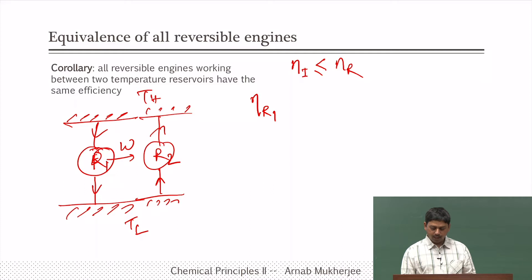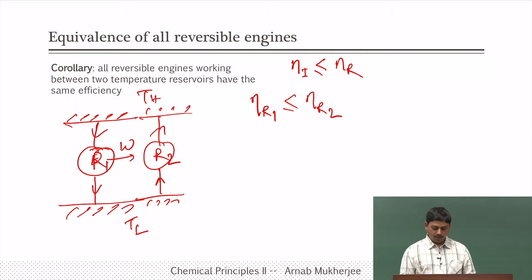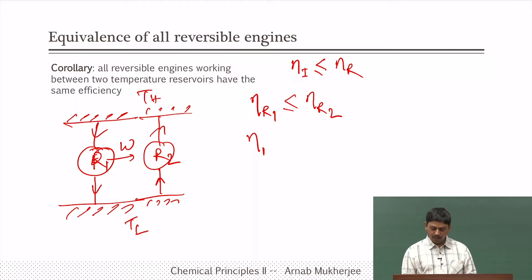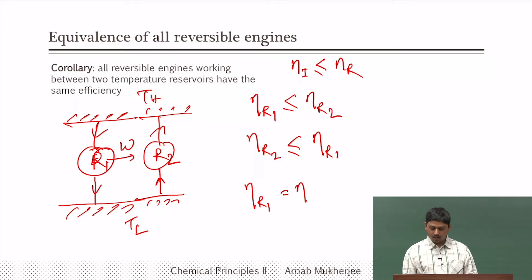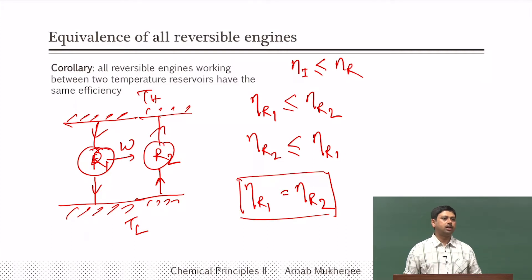Similarly, following the same argument, eta_R1 cannot be greater than eta_R2, for the same reason that an irreversible engine was not able to drive a more efficient engine. Now let us switch the places of R1 and R2: R2 drives R1, and since R1 and R2 are arbitrary, eta_R2 cannot be greater than eta_R1. Combining both results, the only possibility is that eta_R1 equals eta_R2, which means all reversible engines have the same efficiency.